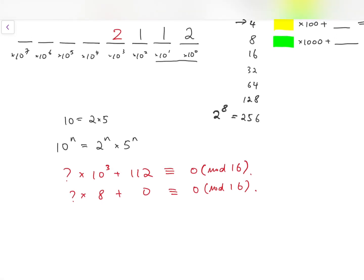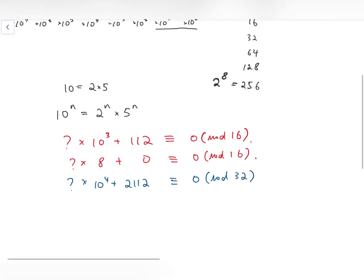Next we have a blue question mark here. So the blue question mark times 10 to the power 4 plus 2112 is congruent to 0 mod 32, the next power of 2.